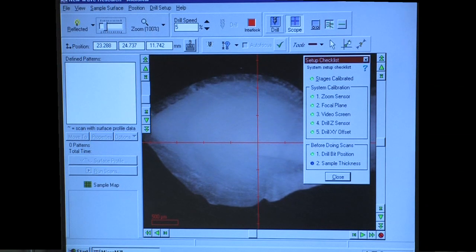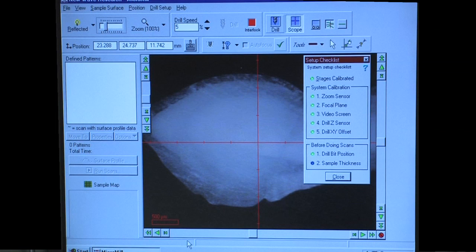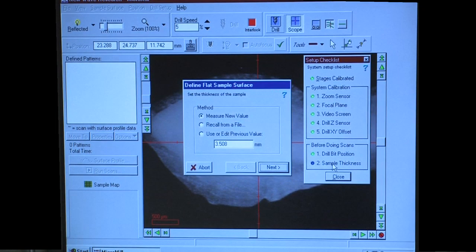To set your sample thickness, center your sample on the screen and choose the Sample Thickness button on the Setup Checklist window and follow the screen prompts carefully. At the first prompt, select Measure New Value and then click Next.